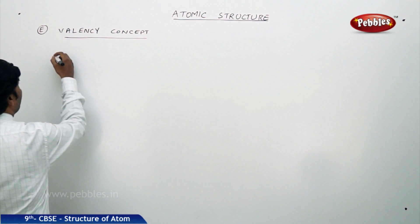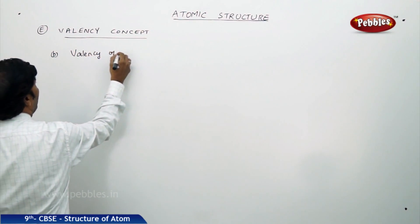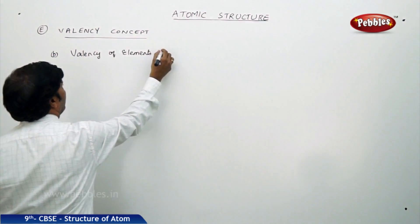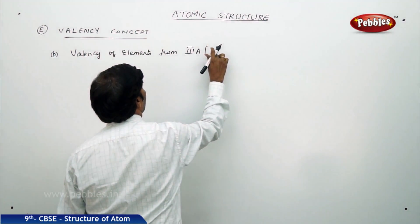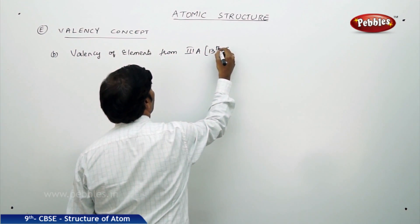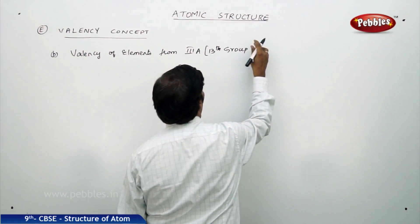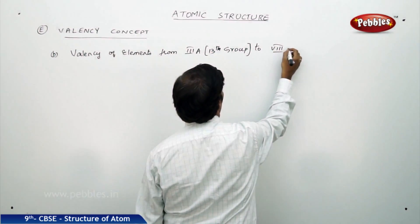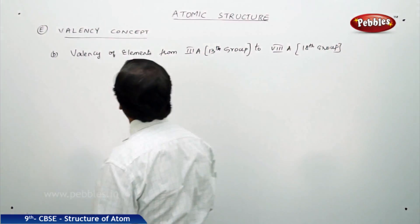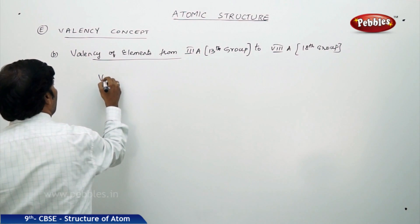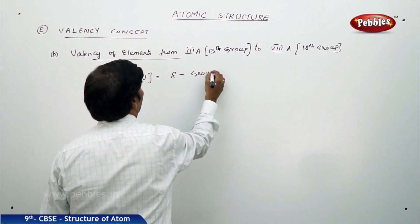Similarly, if you go to the valency of elements from 13th group to 18th group, valency V is equal to 8 minus group number.